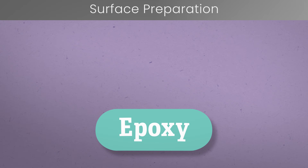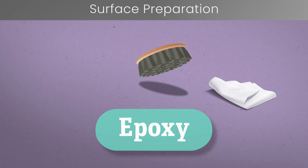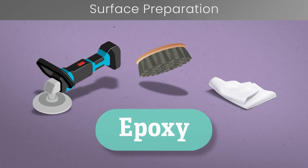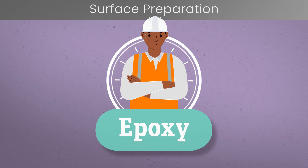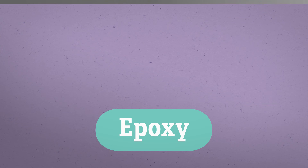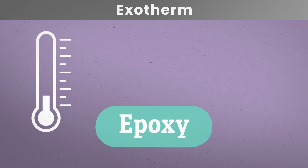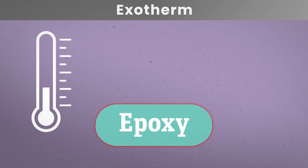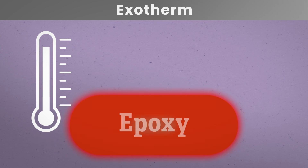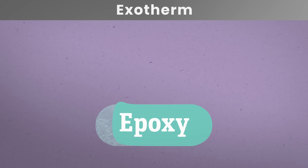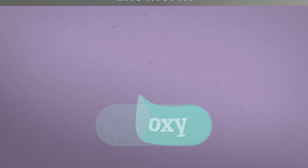Surface preparation is needed with epoxy adhesives. The surface will need to be cleaned and abraded to achieve a strong bond, which can be a time-consuming and labour-intensive process. Epoxies undergo an exothermic reaction as they cure, meaning they will generate heat, especially if used in large quantities. This exothermic heat can potentially damage the substrates and affect the bond.